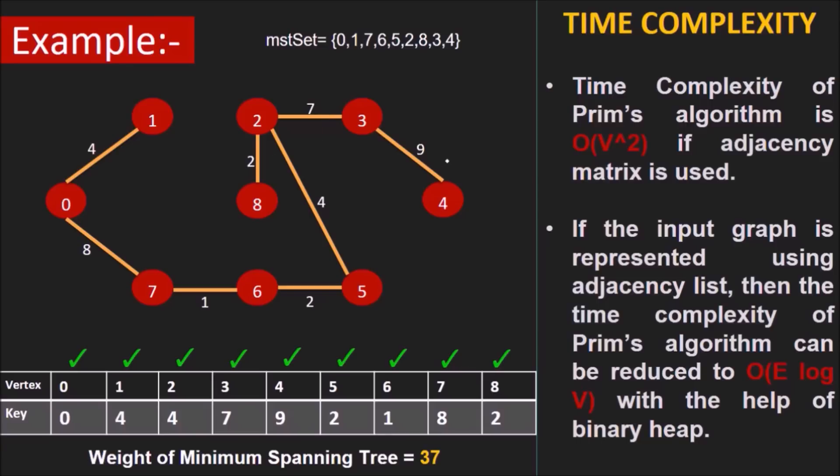Now let's analyze the time complexity of Prim's algorithm. The time complexity of Prim's algorithm is O(V²) if implemented using adjacency matrix and O((V + E) log V) if done using adjacency list and binary heap.